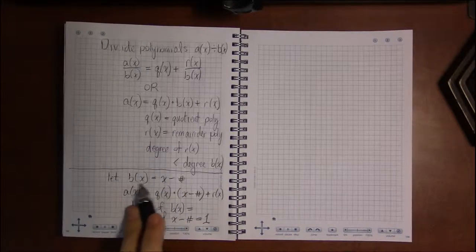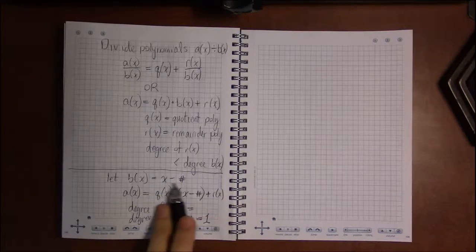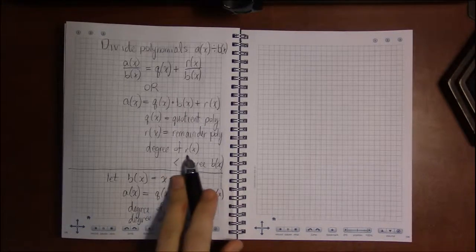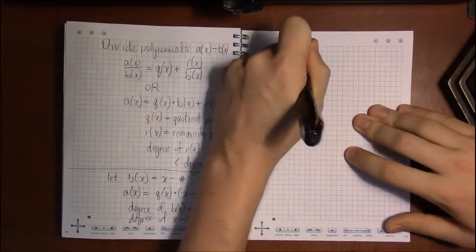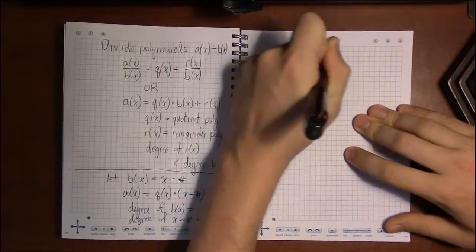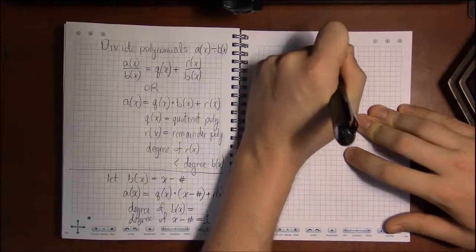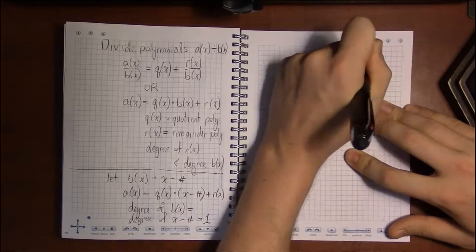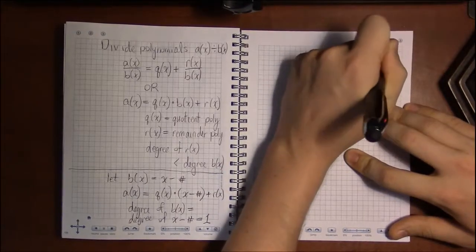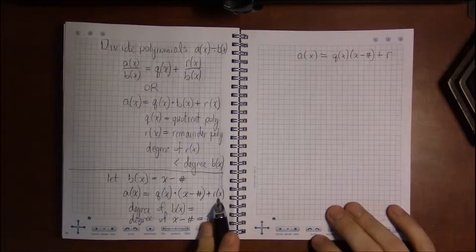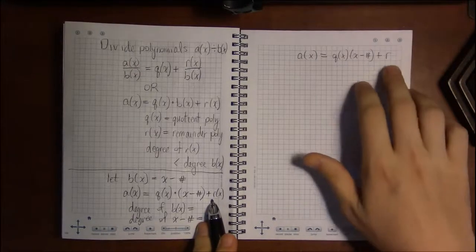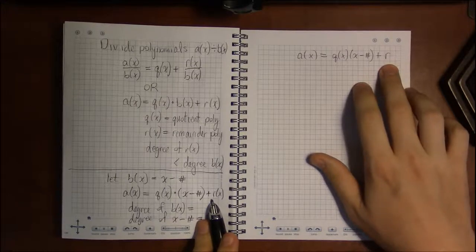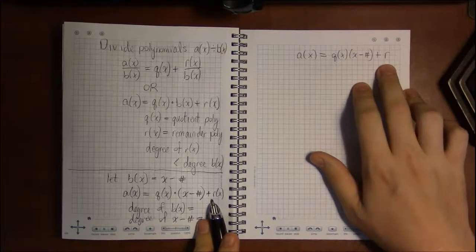And the only thing that has degree less than 1 is a constant polynomial. So if B is linear, if B has degree 1, R has to be another number. So we get A of X being Q of X times X minus some number plus R. There's no more X's on R, because R of X is just one particular number, which we're just going to leave as R.